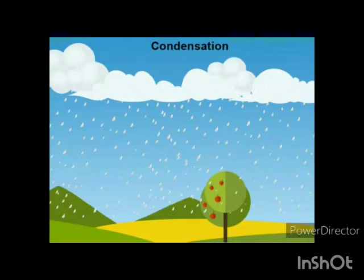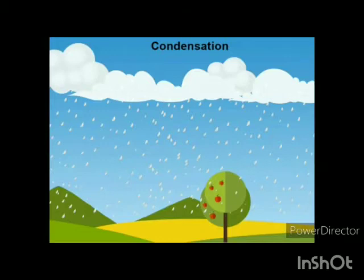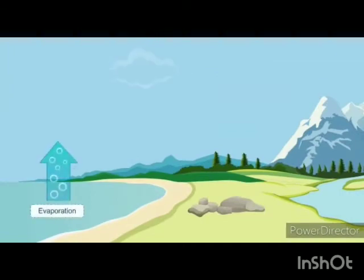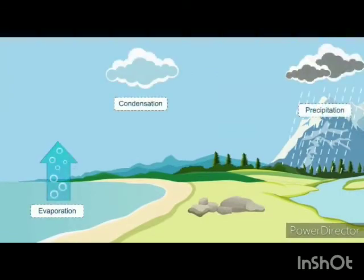Next is condensation. When you put some ice cubes in a cold glass, after some time you find tiny droplets on the outer surface of the glass. This is because when water vapor in the air, which is a gas, comes in contact with the cold glass surface, it cools down and changes into liquid form, forming tiny droplets. This process is called condensation.